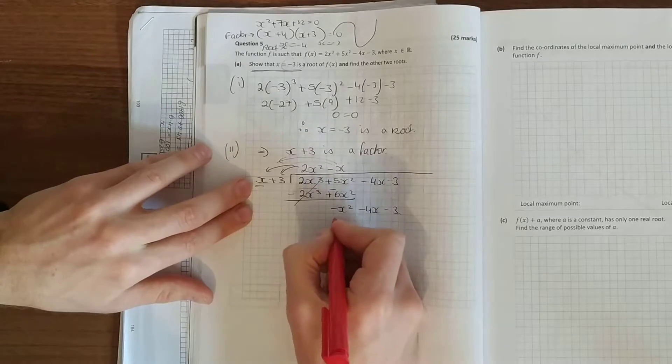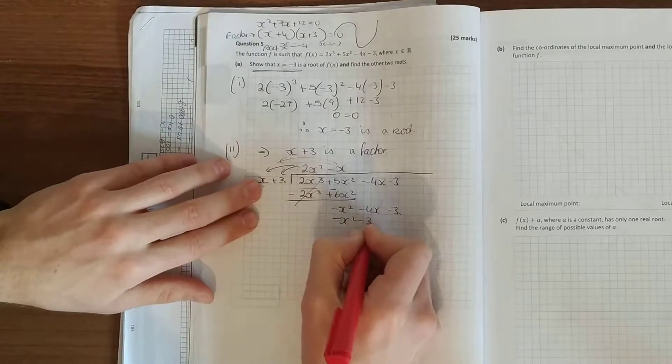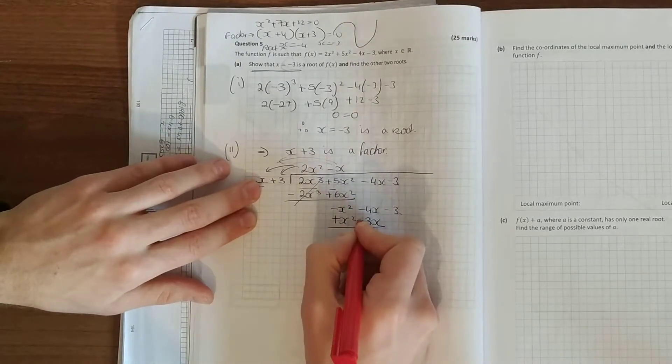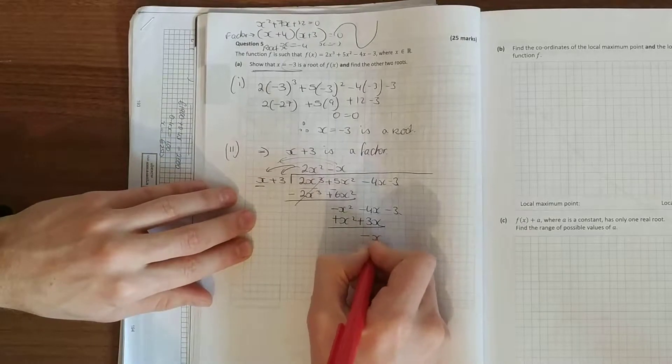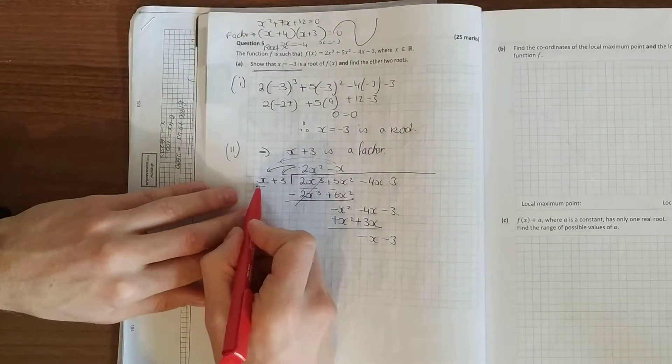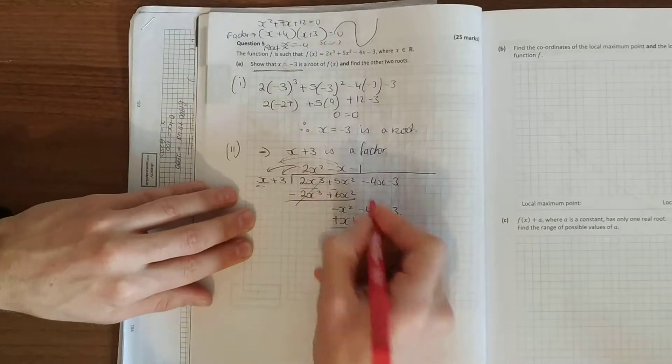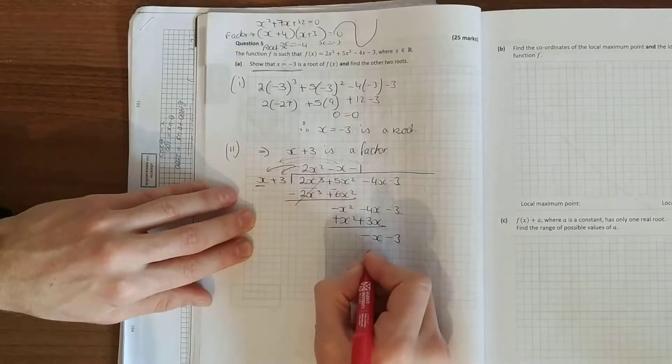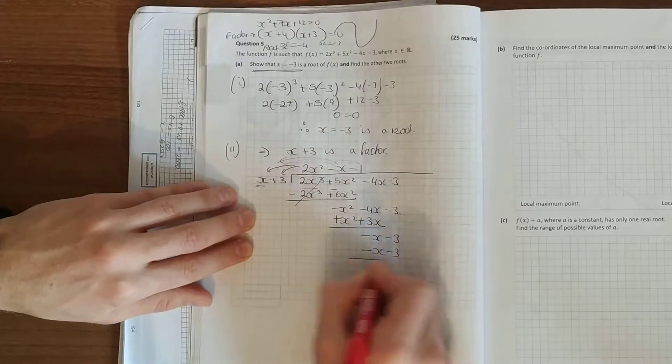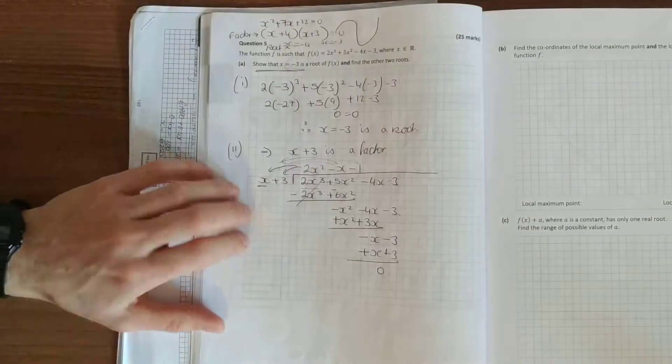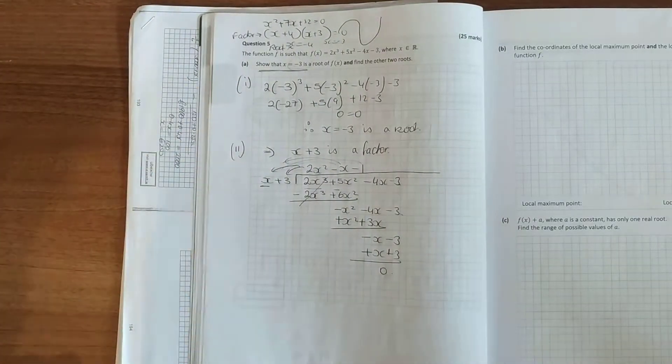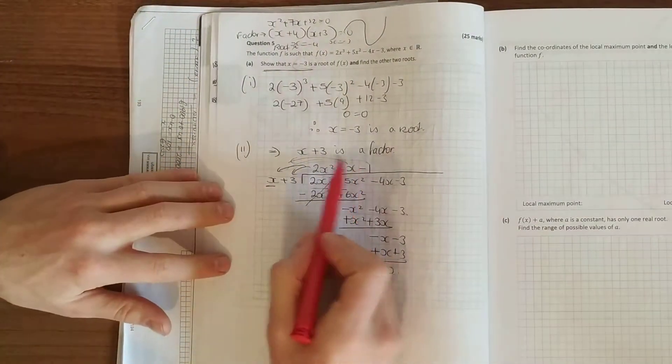Multiply it down. Draw the line, change the size. It's the same steps repeating themselves. So what do you multiply x by to get minus x? Minus 1. Multiply it down. Draw the line, change the size. And they disappear. So, we're left with this quadratic.